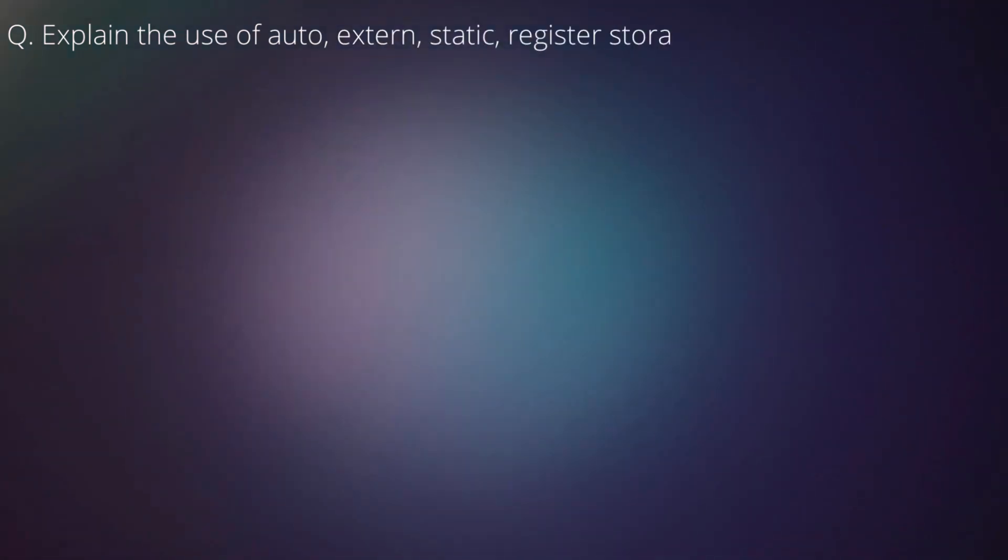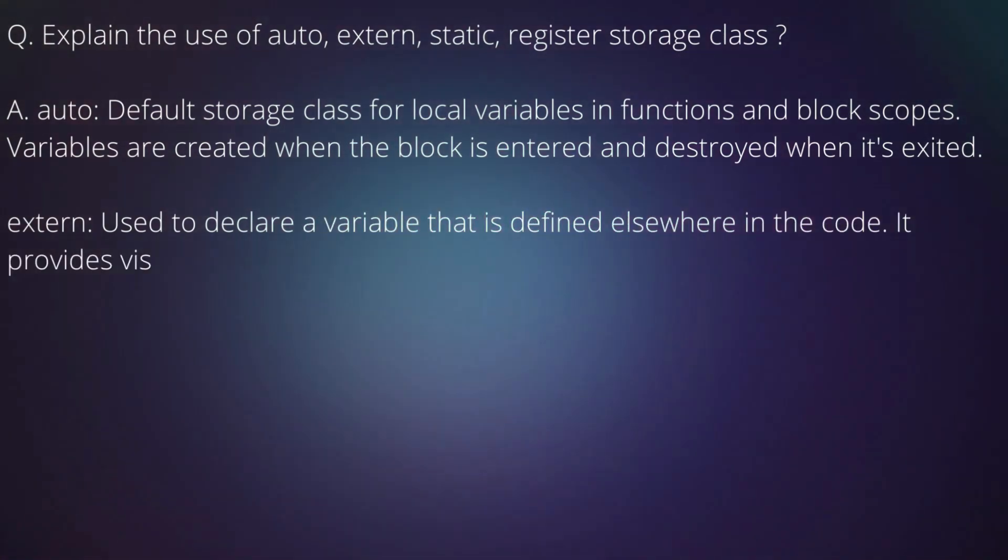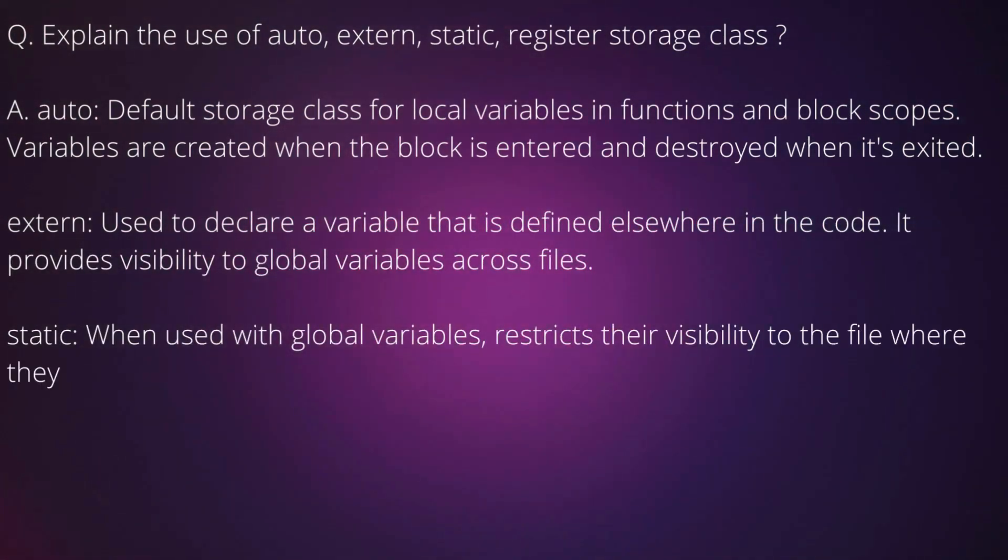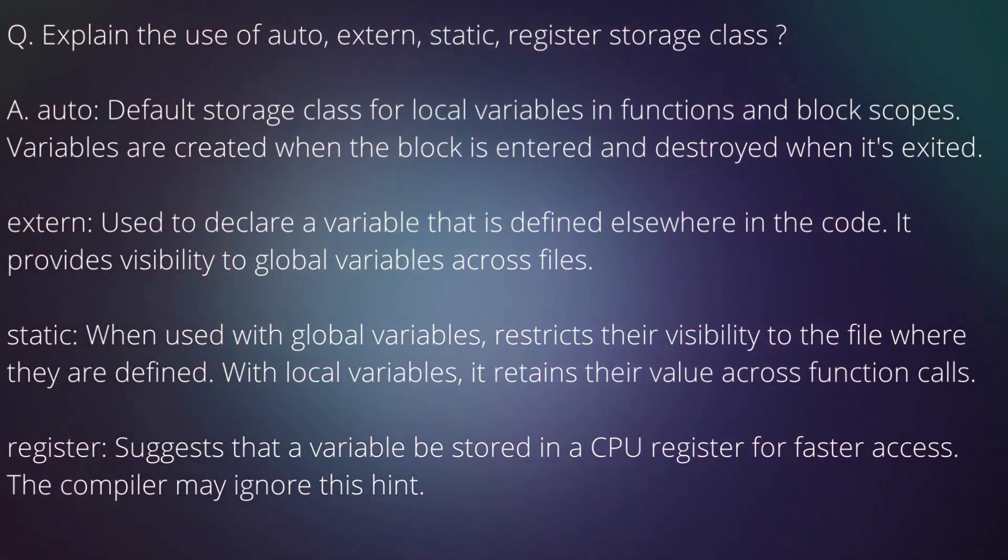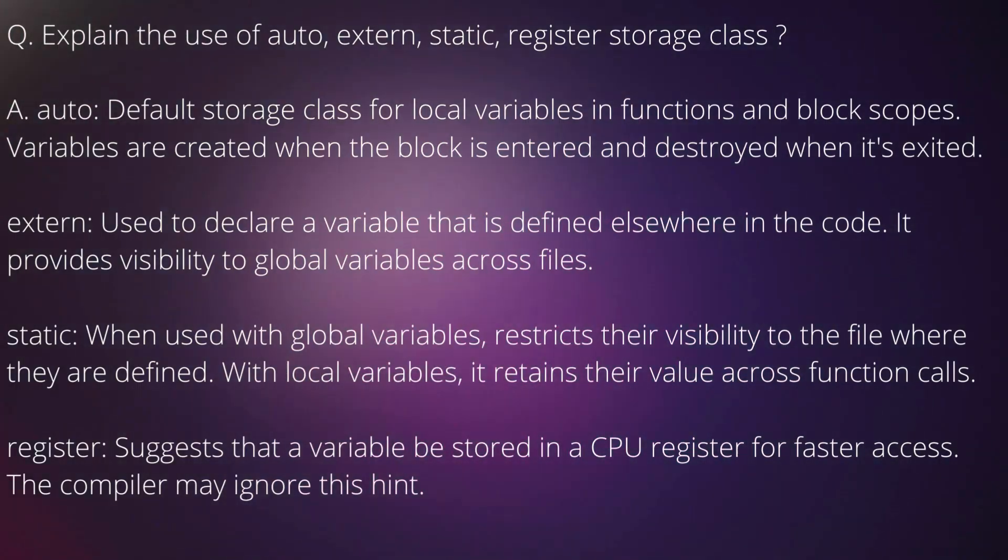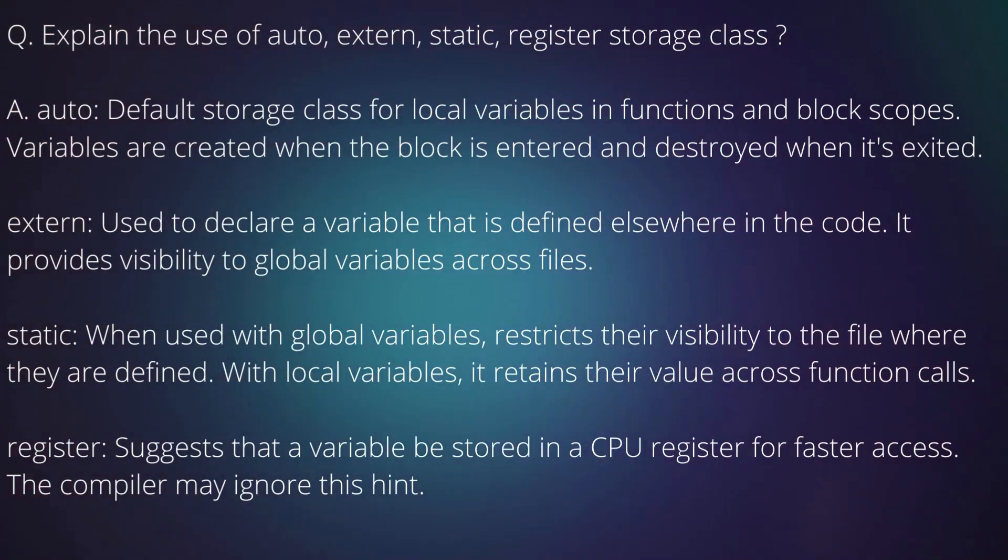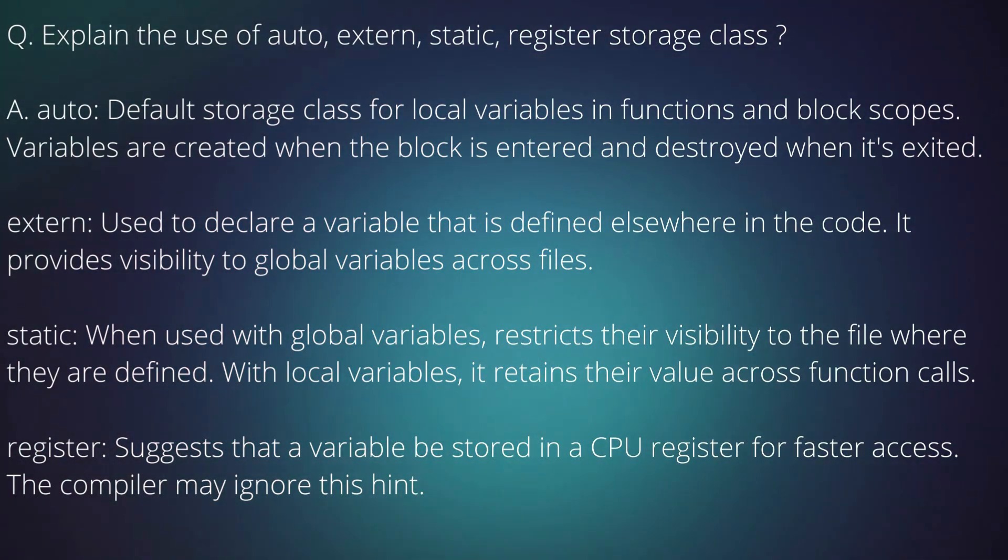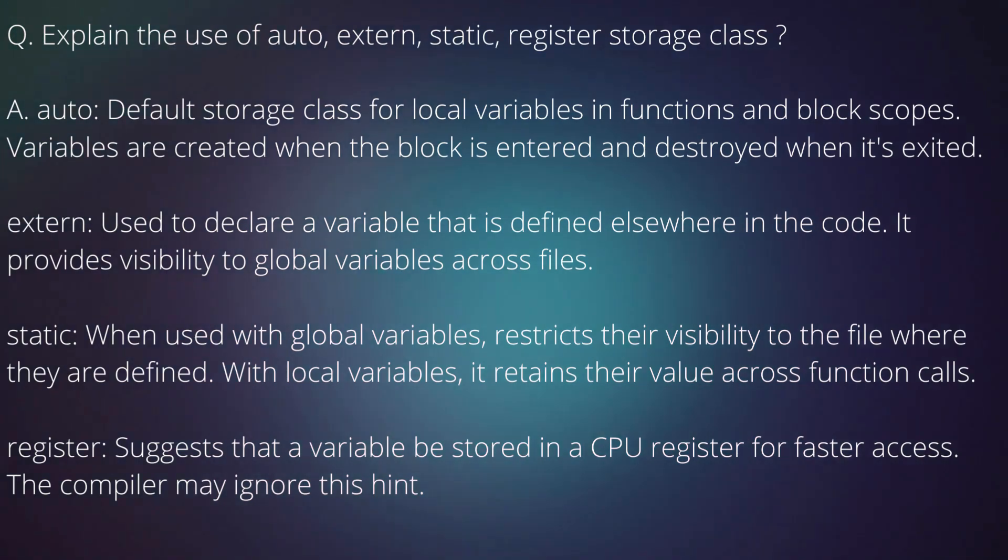Question: Explain the use of auto, extern, static, register storage class. Answer: Auto: Default storage class for local variables in functions and block scopes. Variables are created when the block is entered and destroyed when it's exited. Extern: Used to declare a variable that is defined elsewhere in the code. It provides visibility to global variables across files. Static: When used with global variables, restricts their visibility to the file where they are defined. With local variables, it retains their value across function calls. Register: Suggests that a variable be stored in a CPU register for faster access. The compiler may ignore this hint.